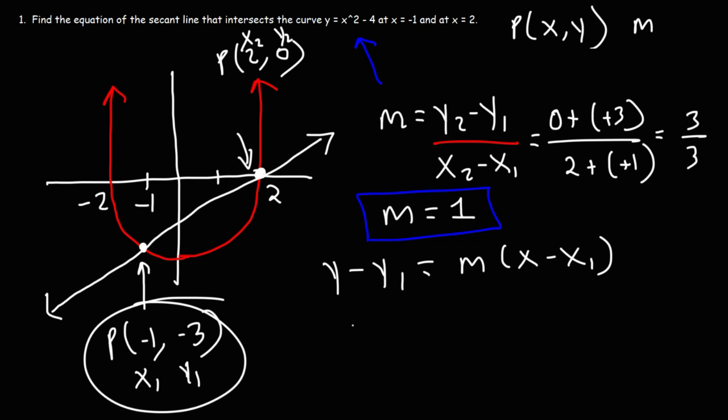So let's use this point. We're going to replace y1 with negative 3. m is 1. And x1, we're going to replace that with negative 1. So this becomes y plus 3. And that's equal to 1 times x plus 1, which we can simply write that as x plus 1.